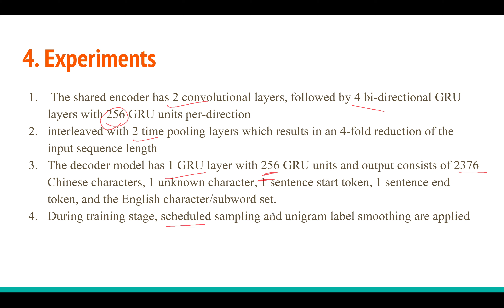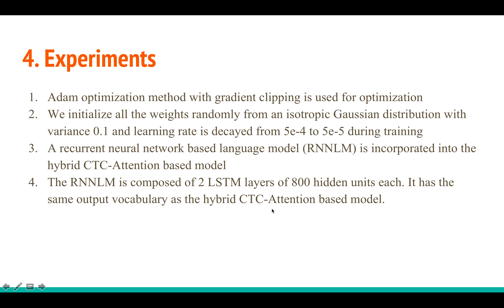Training uses scheduled sampling (as proposed by Bengio et al.) and label smoothing. The optimizer is Adam with gradient clipping, and weights are initialized from an isotropic Gaussian distribution. The learning rate is decayed after each epoch. For decoding, an RNN language model with two LSTM layers is integrated using the cold fusion technique within the hybrid CTC-attention framework.